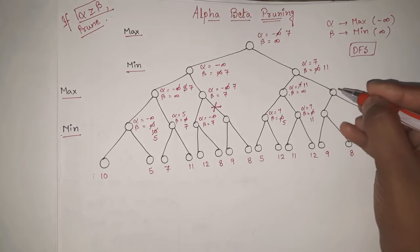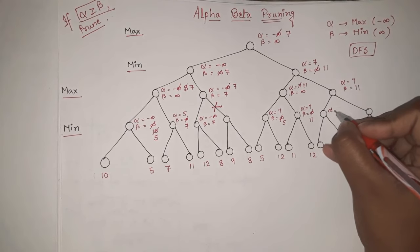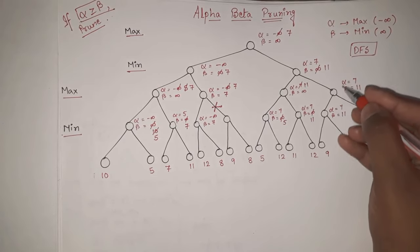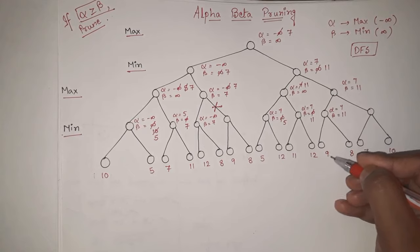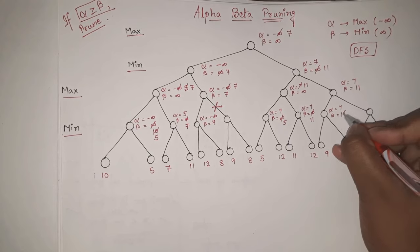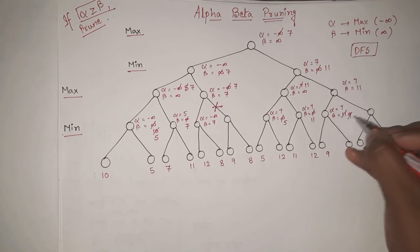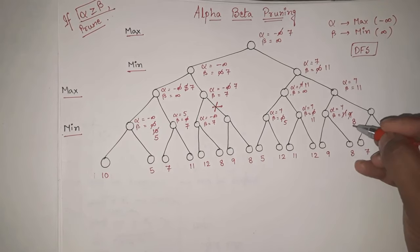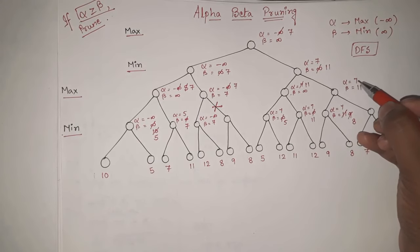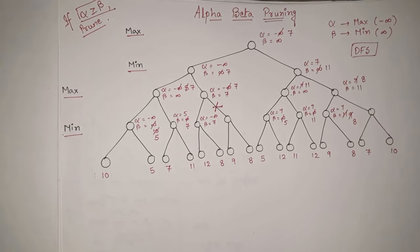We come to the next node where the value is carried forward: alpha equal to 7, beta equal to 11. Here also alpha equal to 7, beta equal to 11. At leaf node 9, this is min, so beta is updated. Out of 11 and 9, the smaller is 9. Then out of 9 and 8, the smaller is 8. So beta is updated to 8. Going back up to the max node, alpha is updated. Out of 7, 7, and 8, the maximum is 8. So alpha is updated to 8.